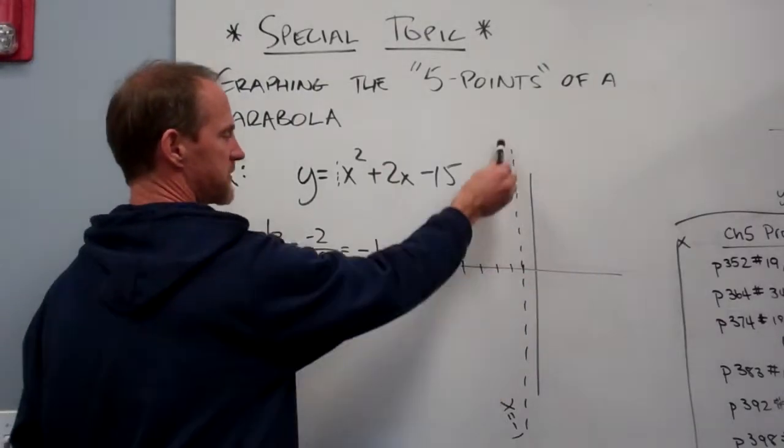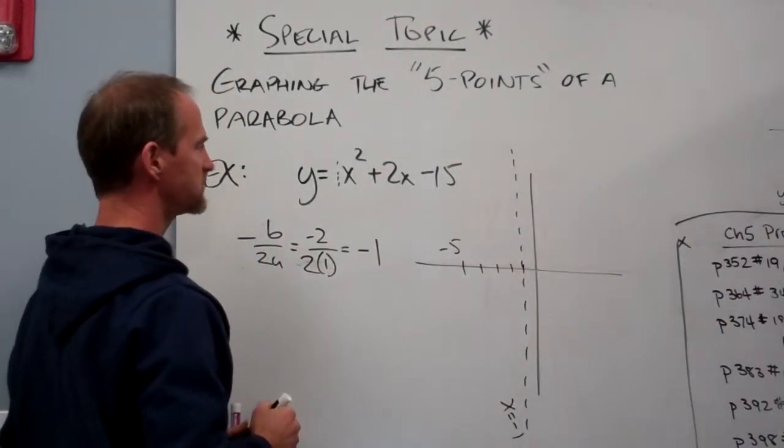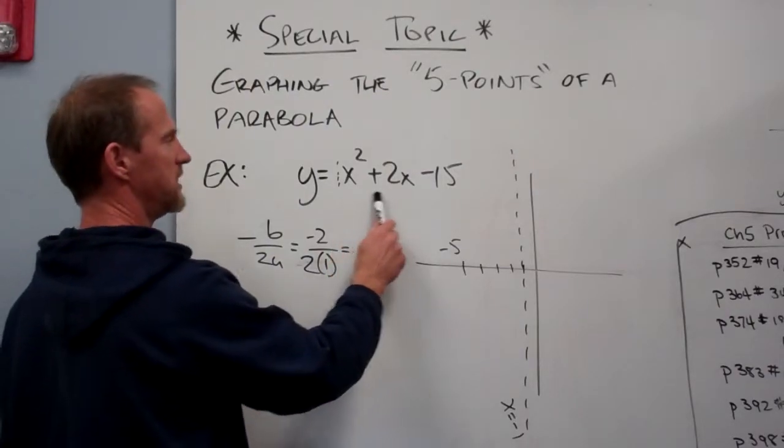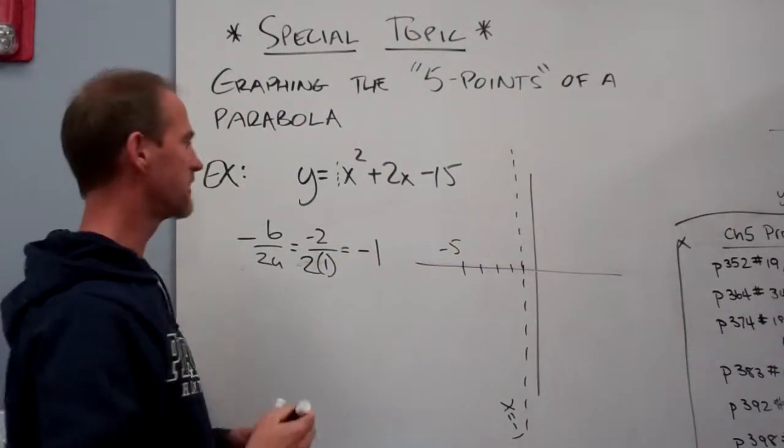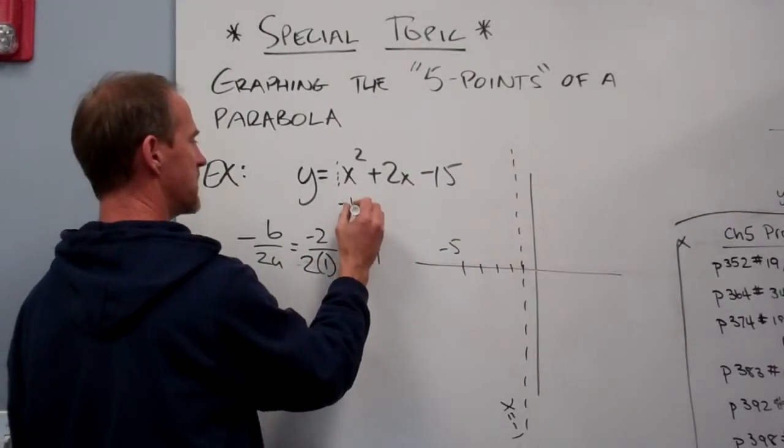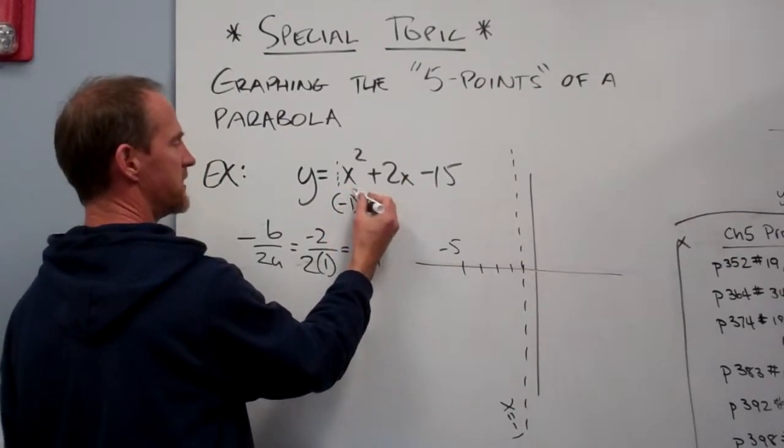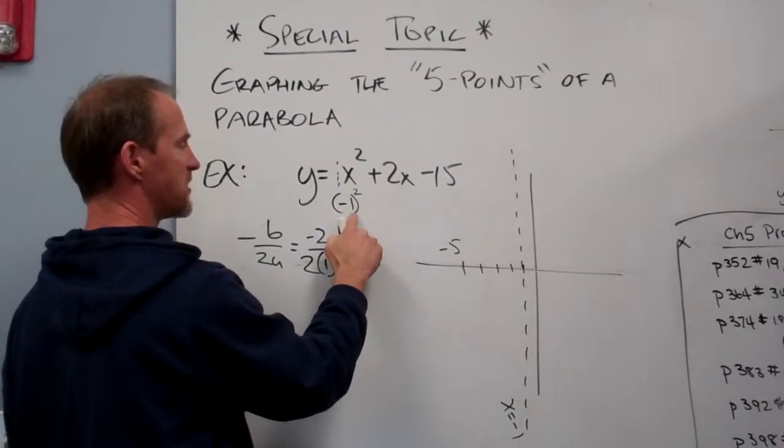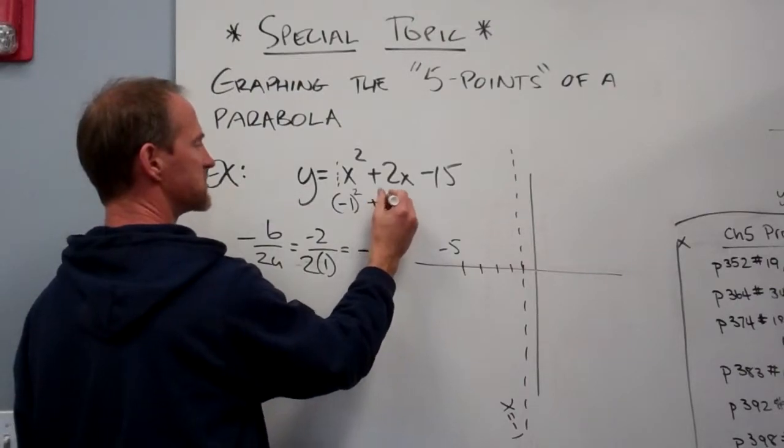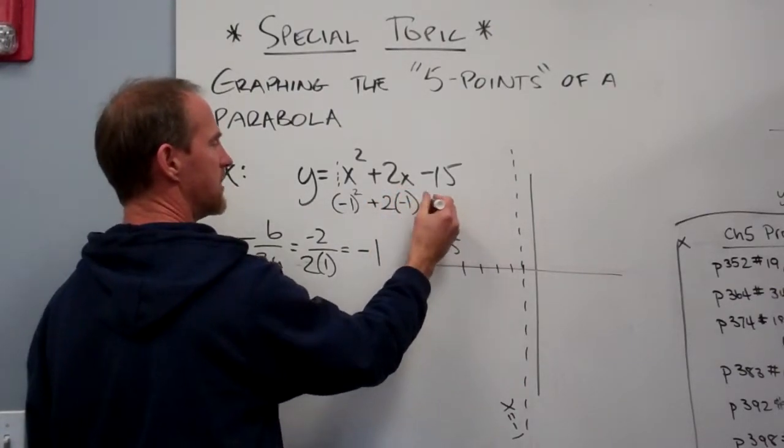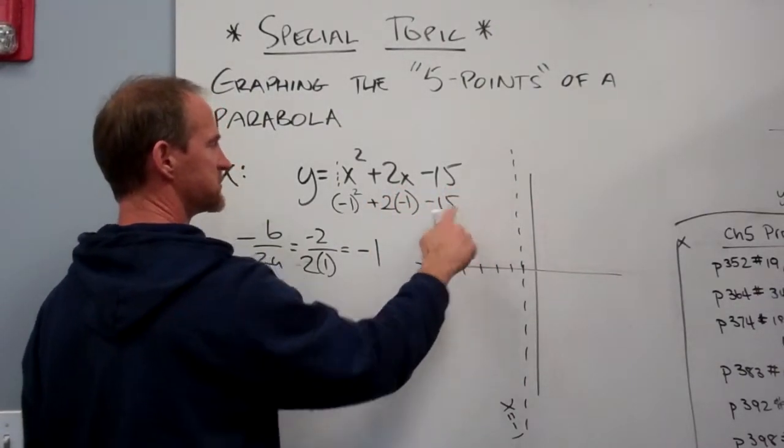Well, how do I find the other vertex point, the y vertex point? I plug in negative 1 and work it out. Here's where you want to be really careful. Just make sure you don't mess up with the negative signs. That's a negative 1 squared, that's going to be a positive 1 plus 2 times a negative 1 minus 15. There's nothing to substitute in there.